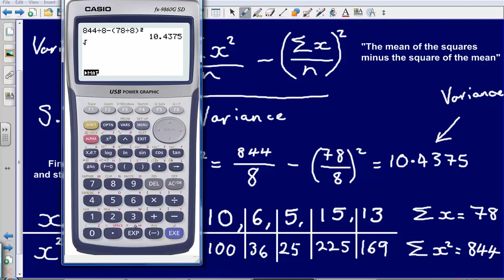How do I put in the answer? I'm not sure. Let's just put 10.4375. And that gives us a standard deviation of 3.2307.